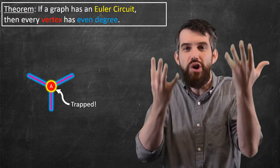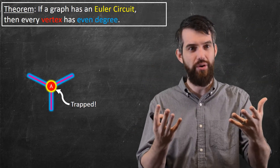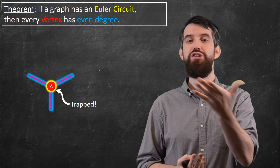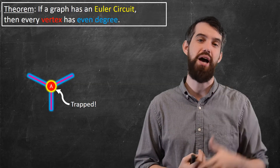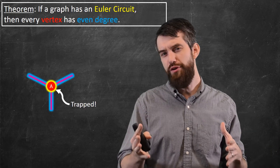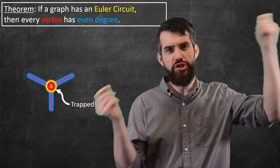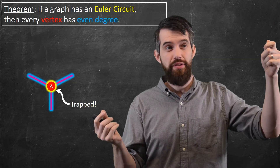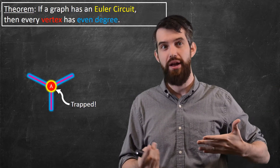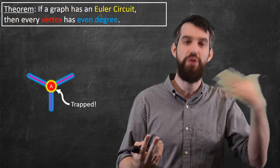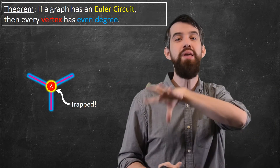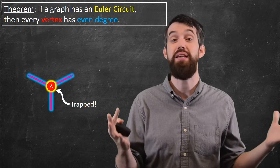This is even true if A is your starting vertex. You leave and come back, leave and come back — but if it's an odd number, eventually you have to leave and cannot come back, so the Euler circuit returning to its origin is not possible. For an Euler path where the starting and ending vertices are different, those two endpoints actually have to be odd, since the first move is just a go, not a go-and-come-back. All the vertices in the middle, however, must have even degree for an Euler path.